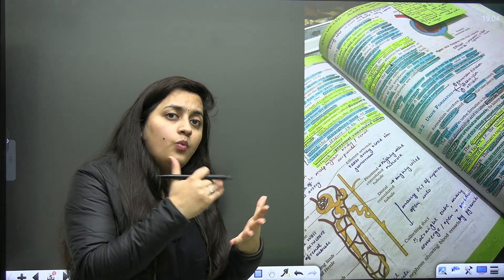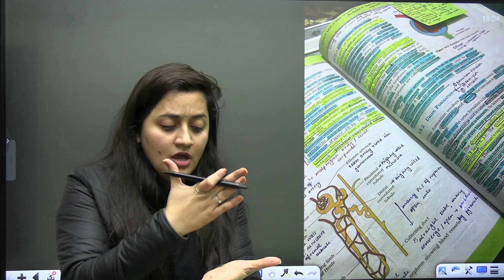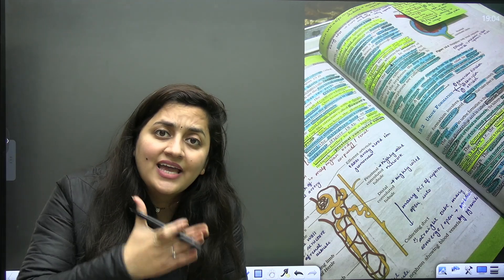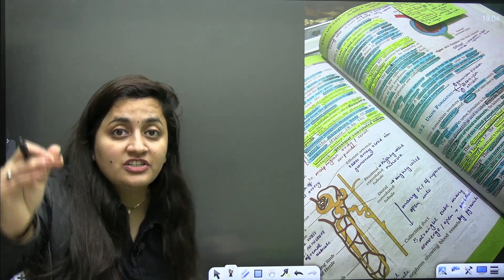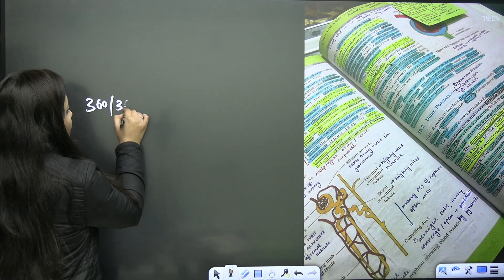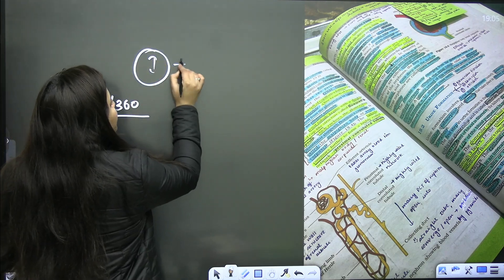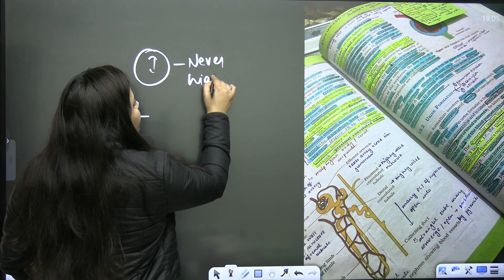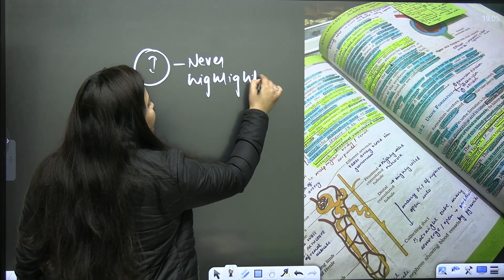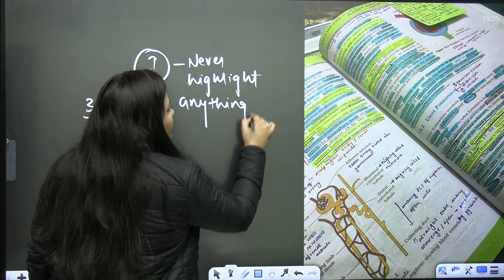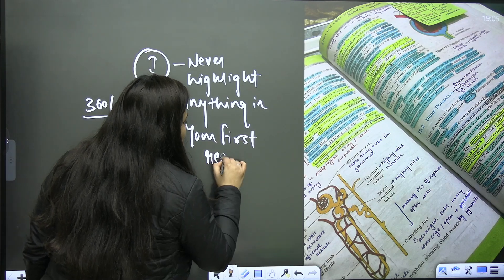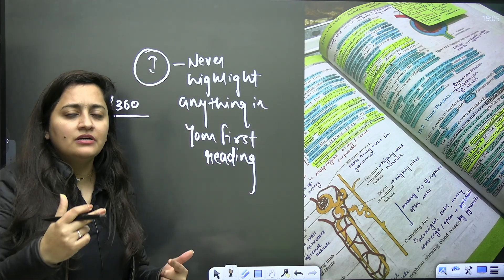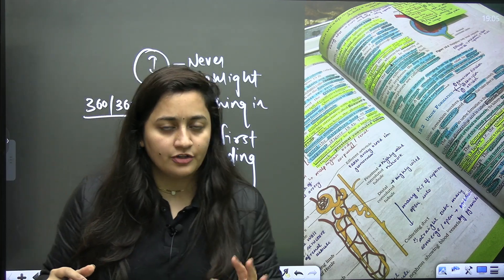You can buy a new NCERT and highlight the things again, or even use a PDF — it's purely your choice. The book is not expensive. From January to April you are going to read this book multiple times, especially for biology, because we have to score 360 out of 360. So the first step is: never highlight anything in your first reading. Please keep that in mind.